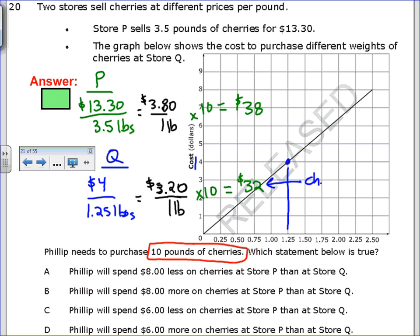I'd rather pay $32 than $38. So, when I look at my answer choices, it asks me the difference between them. So, 38 minus 32 is 6. So, the ones that say $8, I can go ahead and rule those out. And then between the last two, Philip will spend $6 more at store P, because that's more expensive. So, my answer is D.